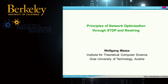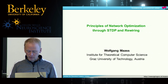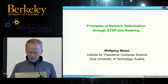I think one of the most important computational features of biological networks of neurons is that they learn. One should first think about their learning, and then computation follows from this. So this is just one suggestion.